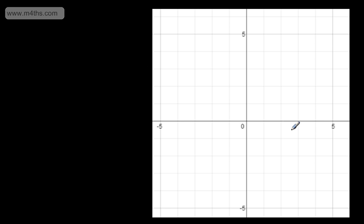In this video, we're going to look at some quick worked examples of finding the midpoint of a line connecting two sets of coordinates. I'm going to choose a point on the grid — this point here. We've got an x-coordinate of 3 and a y-coordinate of 1, so we can label this 3, 1. I'm now going to choose another point: this point here, with an x-coordinate of 5 and a y-coordinate of 5, so 5, 5.